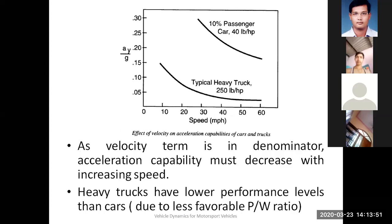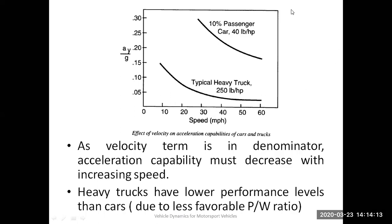Comparing a passenger car to a heavy truck: acceleration with respect to gravity is plotted on the y-axis and speed in miles per hour on the x-axis. As the velocity term is in the denominator, the acceleration capability must decrease with increasing speed. At low speeds you can quickly accelerate the vehicle, but as you go to cruising or highest speeds, the acceleration you can get from your vehicle decreases. Heavy trucks have a lower performance level than cars — this is due to the favorable power-to-weight ratio. Passenger cars have a very good power-to-weight ratio, whereas for trucks it is quite less favorable.